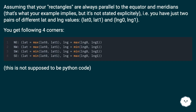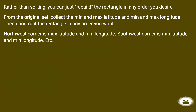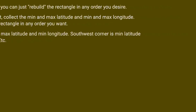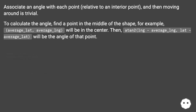This is not supposed to be Python code. Rather than sorting, you can just rebuild the rectangle in any order you desire. From the original set, collect the min and max latitude and min and max longitude, then construct the rectangle in any order you want. The northwest corner is max latitude and min longitude; the southwest corner is min latitude and min longitude, etc.